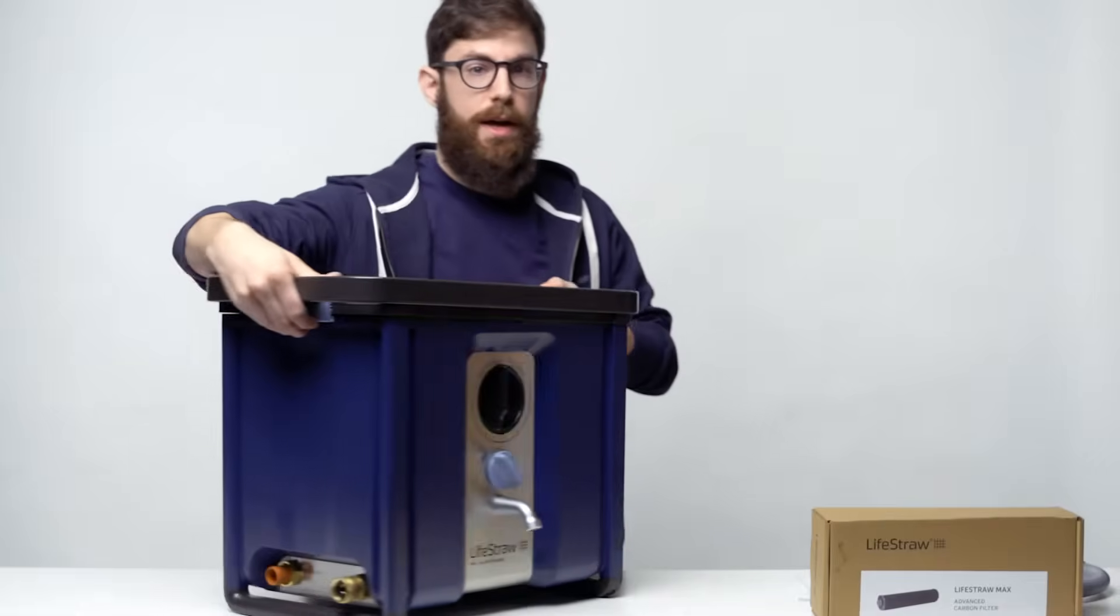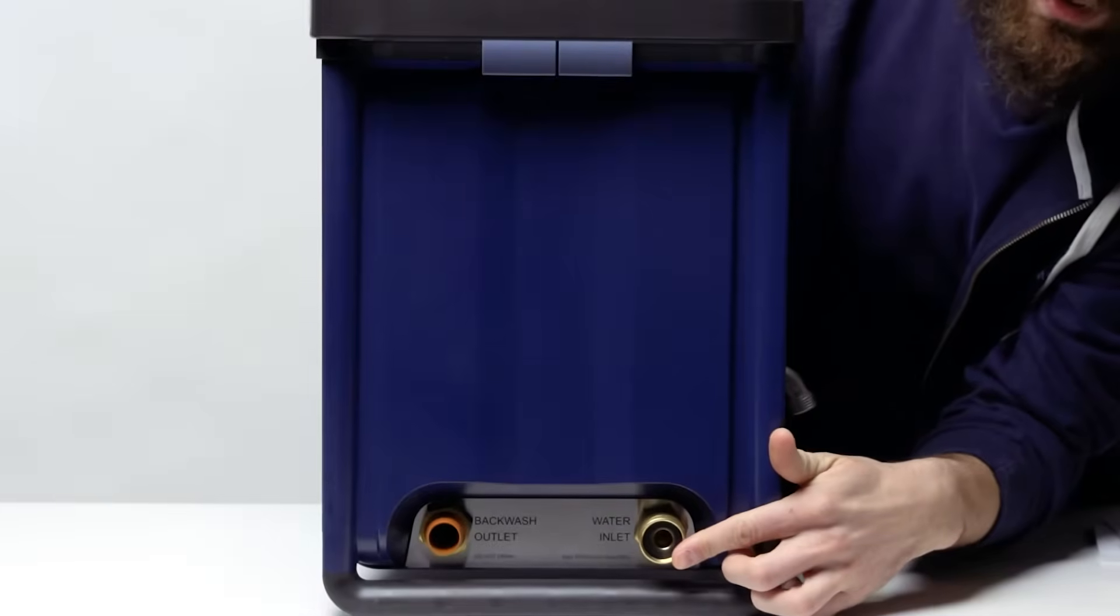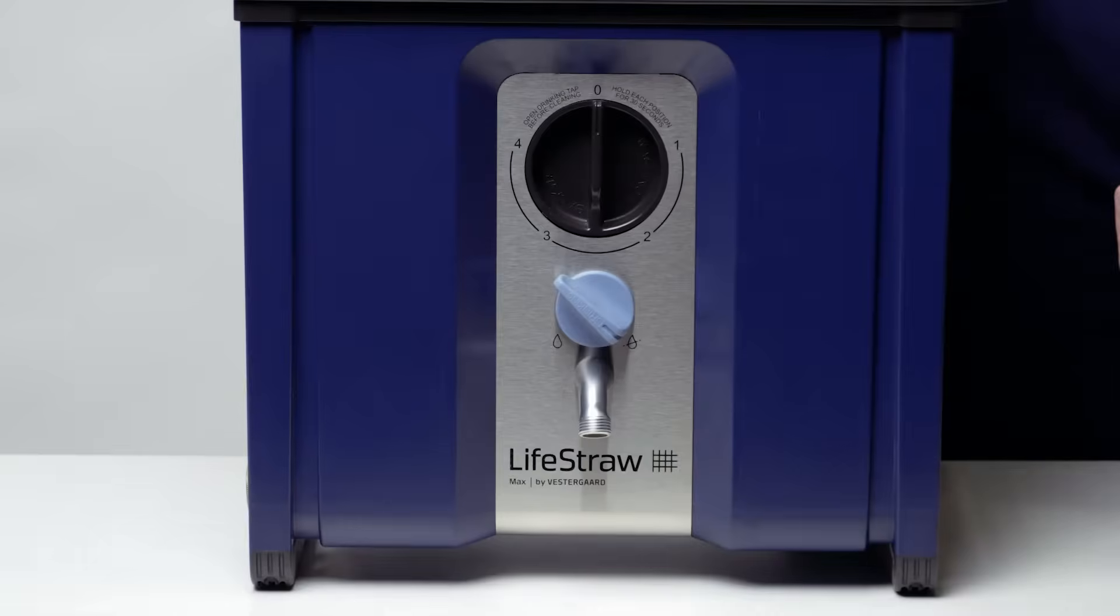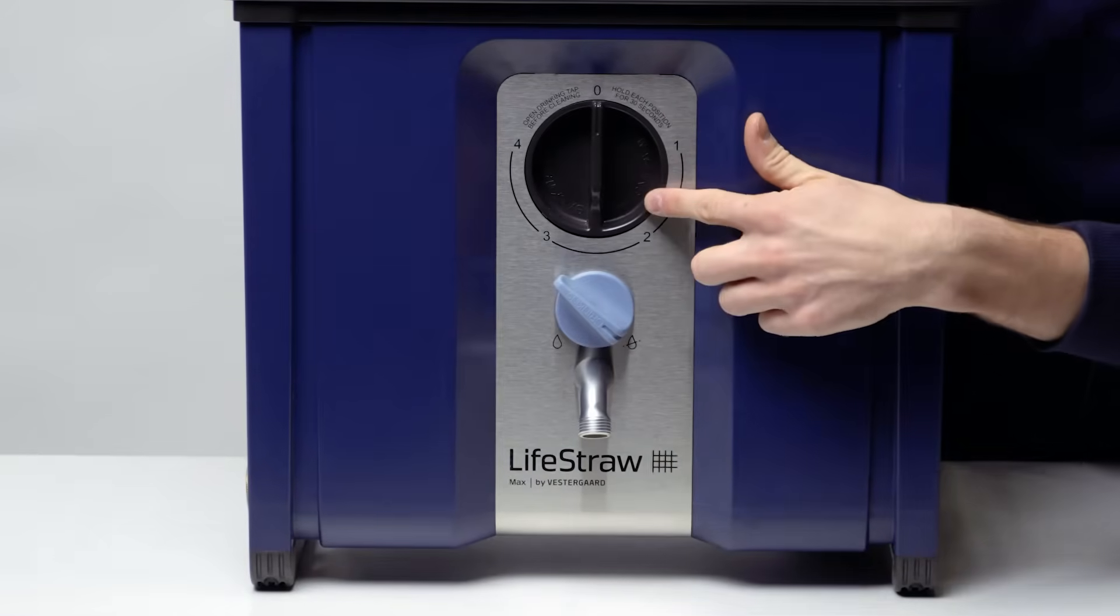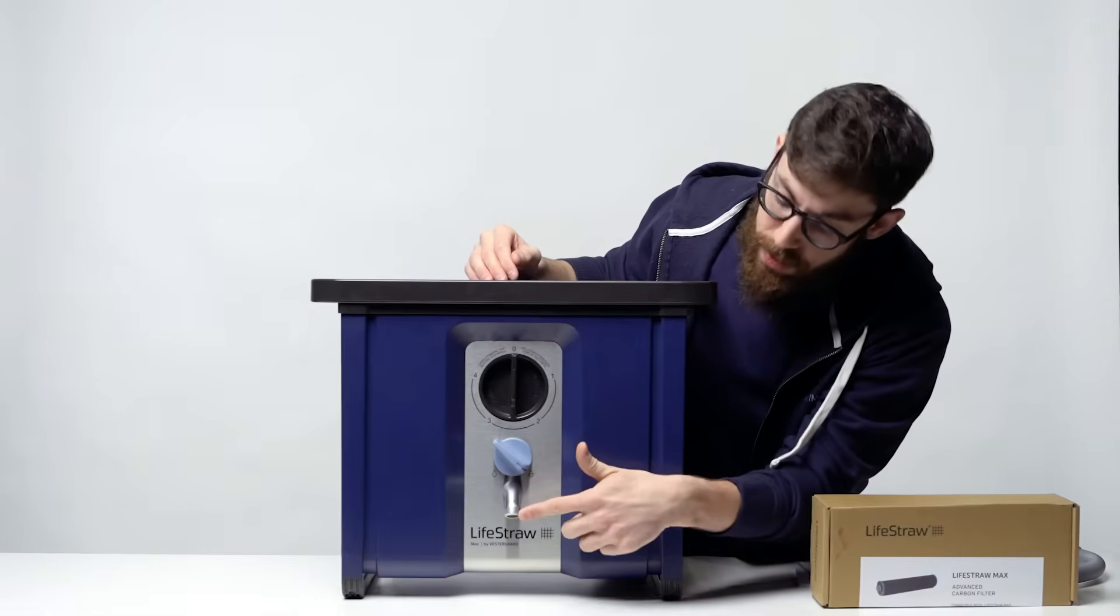Around your Max you'll find your hose adapter and your backwash port, and on the front you'll find your backwash dial, drinking dial, and tap.